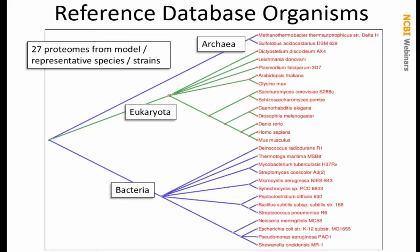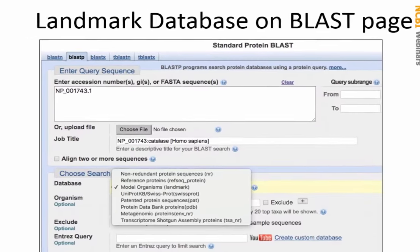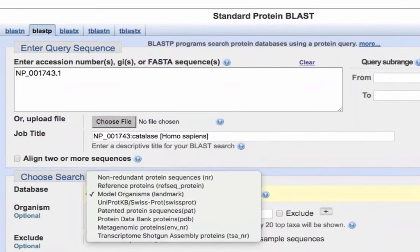This is a phylogenetic tree that Tom Madden made showing the broad phylogenetic spread of organisms represented in this database — a much more balanced view than you'd get searching NR. We have species of bacteria, eukaryotes, and some archaea. This database is available right on the ordinary Protein BLAST page or the translating BLASTX service. You can pick all organisms or the Landmark Model Organisms database. The query we're going to use today is human catalase.